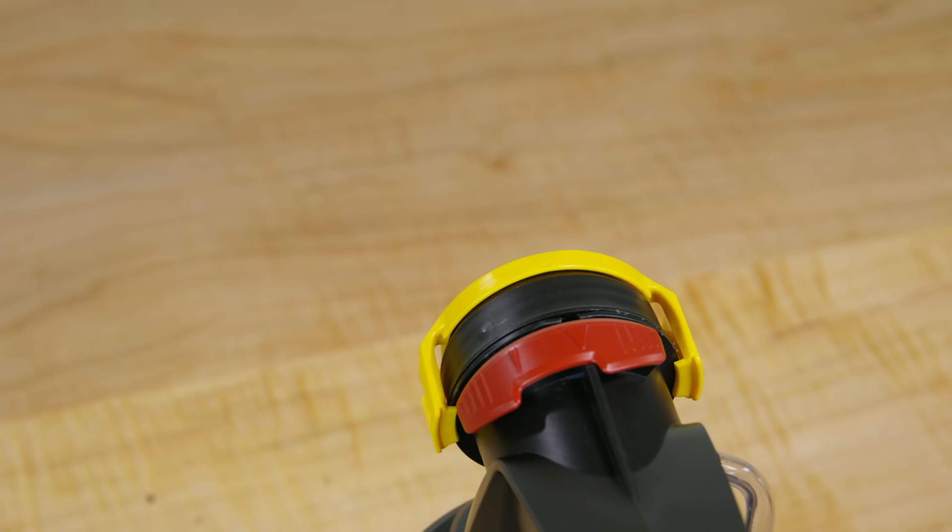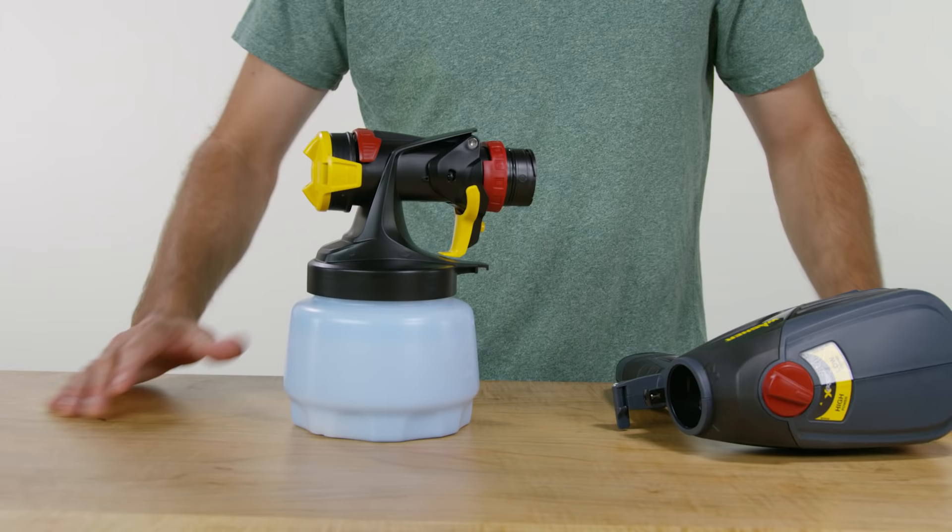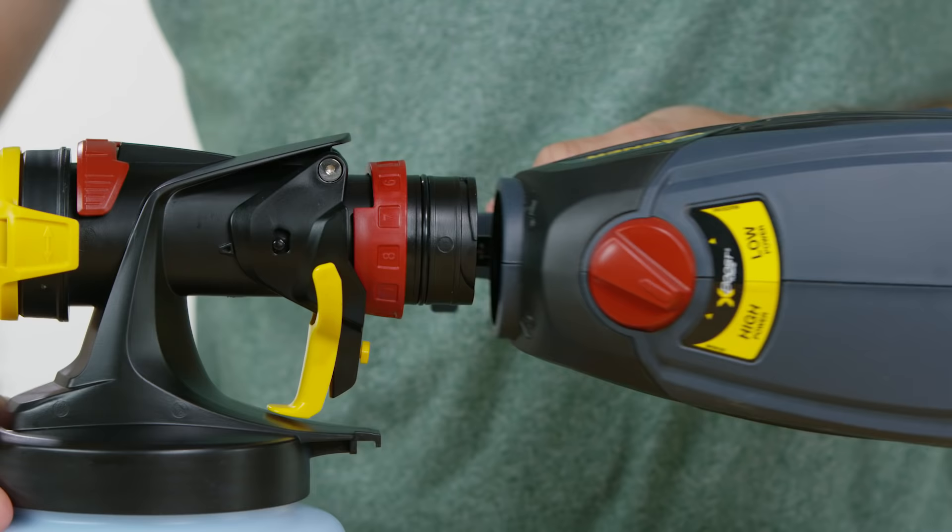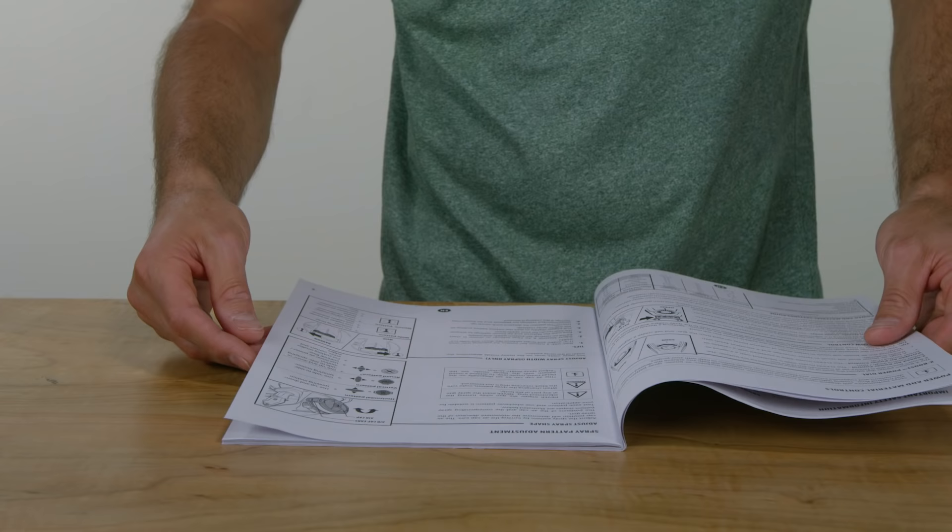You can also adjust the width of the spray pattern by simply sliding the adjustment dial to wide or narrow. Attach the nozzle and cup to the back end by twisting it on. Be sure that it clicks in place.